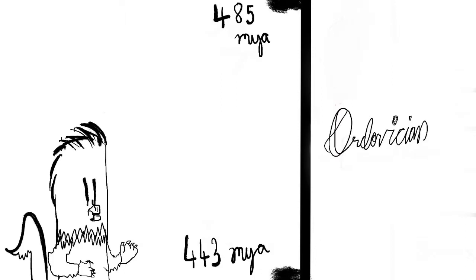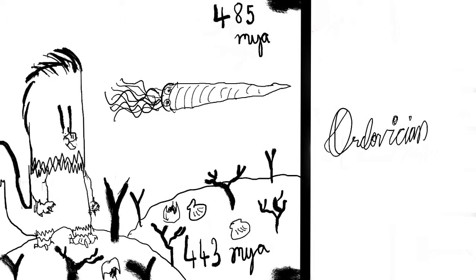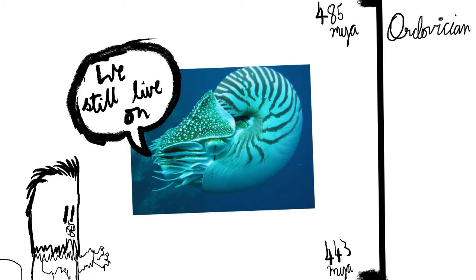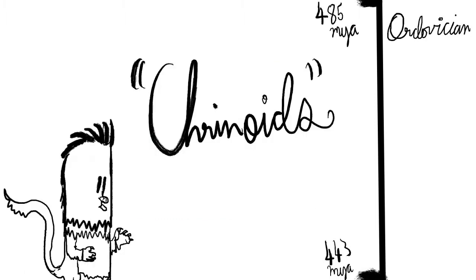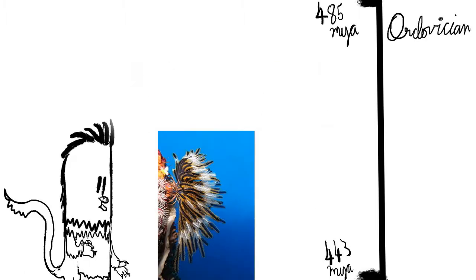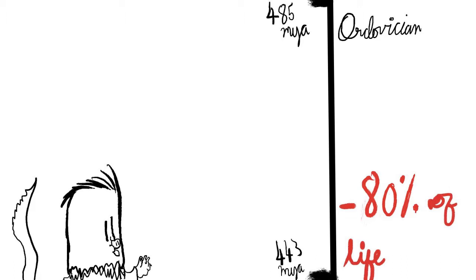The next period was the Ordovician, which began with an extinction event that killed many brachiopods. The Ordovician's wildlife served as a blueprint for future life on Earth. The nautiloids, or mollusks as commonly known, developed, as well as crinoids. The Ordovician ended with a mass extinction event which killed 80% of life on Earth.